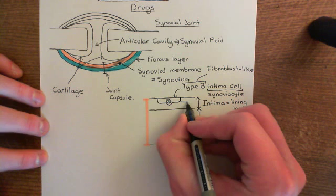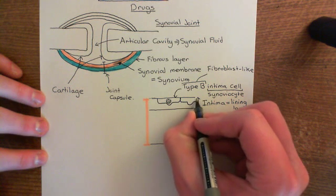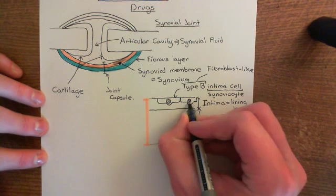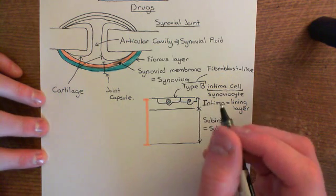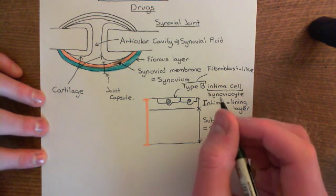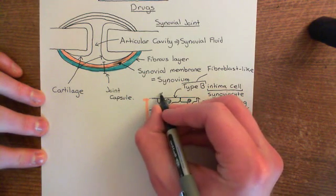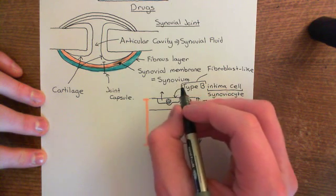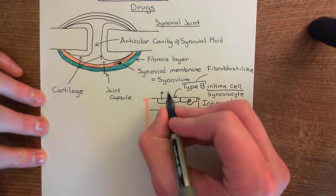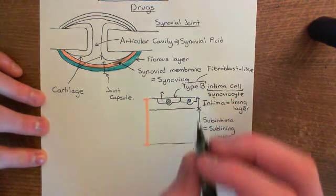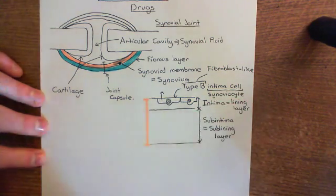Let me draw another one of these here. They border onto the articular cavity. What do these type B intima cells do? Basically, they are going to secrete two very important components of the synovial fluid — secreting stuff into the articular cavity, which is going to be a component of the synovial fluid.